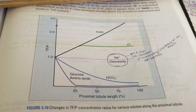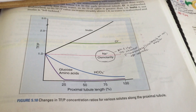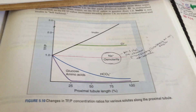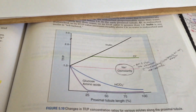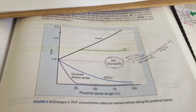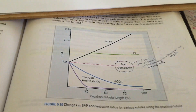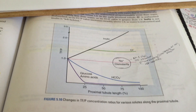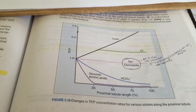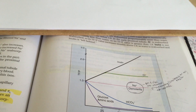I'm going to explain the changes in tubular fluid to plasma concentration ratios for the different substances along the proximal convoluted tubule. This is very easy. I'm going to do it really quickly because I don't have a lot of time, but I'd rather go ahead and do it quickly rather than not do it at all.